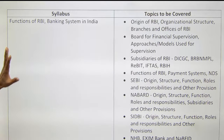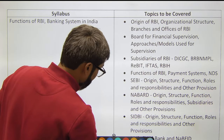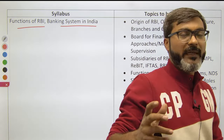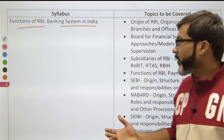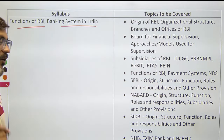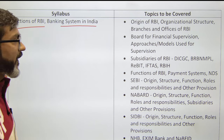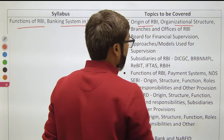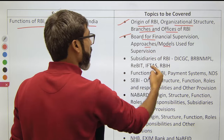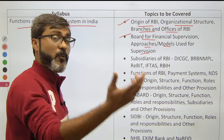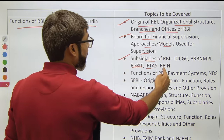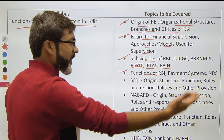In the Finance syllabus, RBI mentions 'functions of RBI in banking system in India.' The topics you have to cover here include: origin of RBI, organization structure, branches and offices of RBI, approaches or models used for supervision, supervision by RBI, and subsidiaries of RBI such as DICGC, REBIT, IFTAS, and RBI Innovation Hub. Also cover functions of RBI, payment systems, and payment and settlement systems — NDS is very important here.